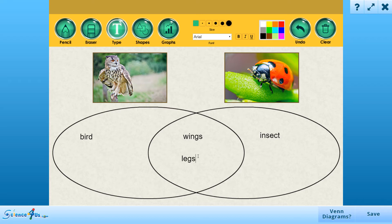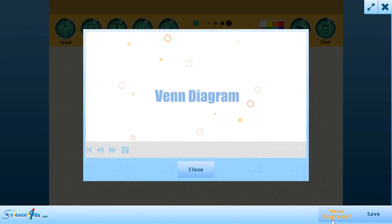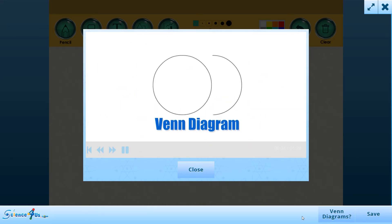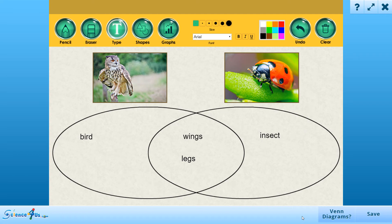If the student is unsure of what a Venn diagram is, they can watch a helpful instructional video explaining what they are. A Venn diagram is a type of diagram that uses circles to compare objects. Venn diagrams help us sort objects into groups. The Venn diagram can then be saved to their journal to be reviewed later.